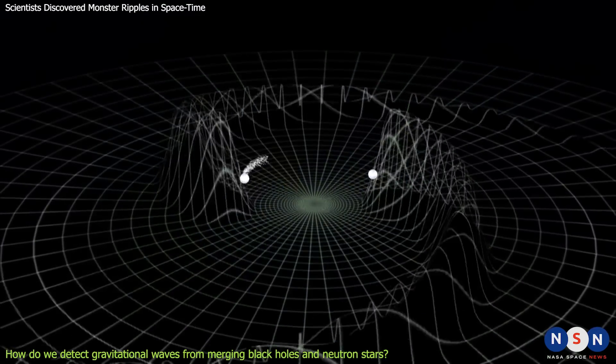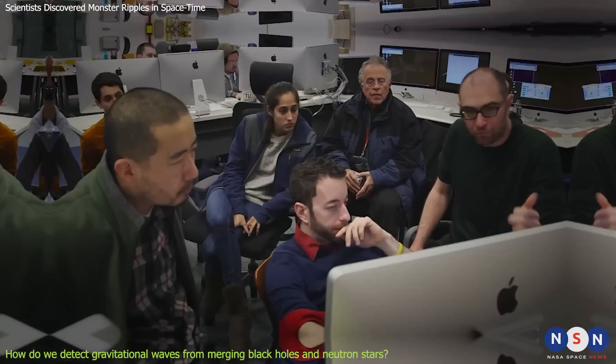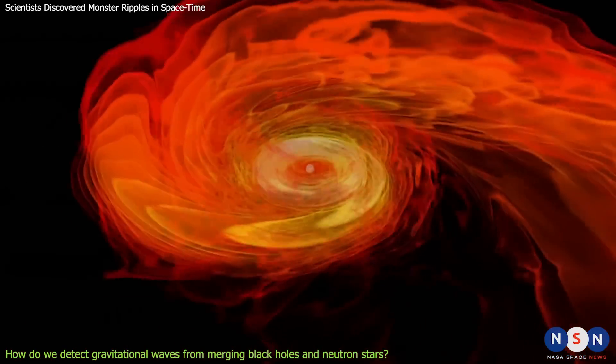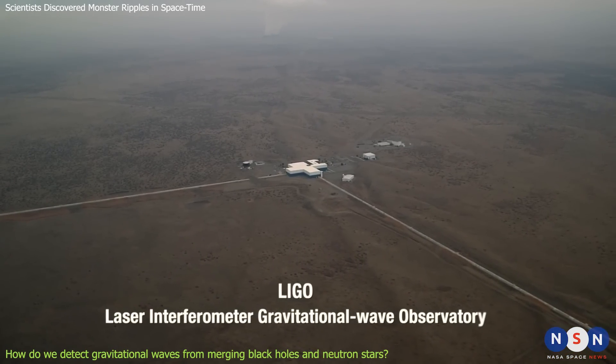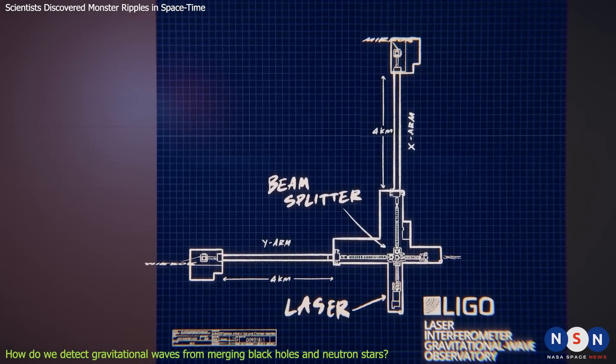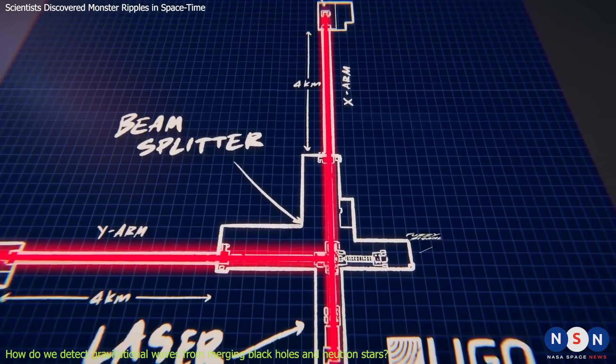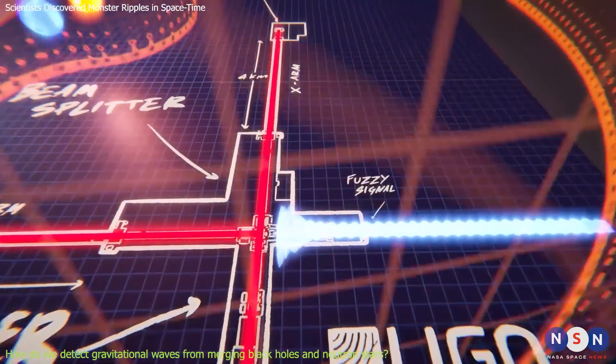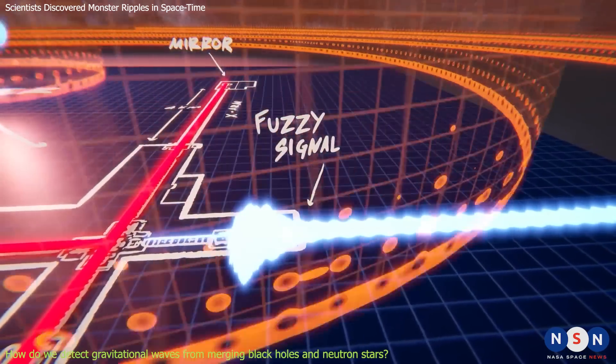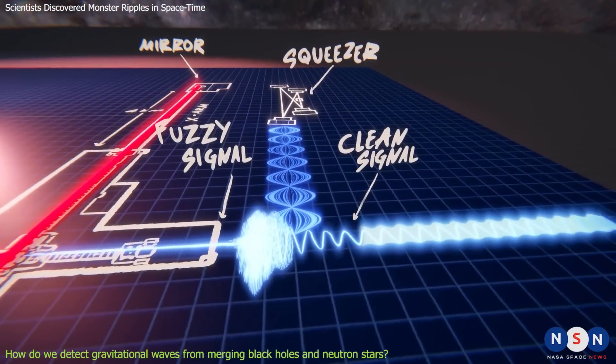In fact, gravitational waves are extremely hard to detect, because they are very weak and easily drowned out by noise. The first direct detection of gravitational waves was made in 2015 by the twin detectors of LIGO, which stands for Laser Interferometer Gravitational Wave Observatory. LIGO consists of two L-shaped tunnels, each four kilometers long, with mirrors at the ends. A laser beam is split and sent along each arm of the L, then reflected back and recombined. If a gravitational wave passes by, it will slightly change the length of each arm, causing a tiny shift in the interference pattern of the laser light. By measuring this shift with extreme precision, LIGO can infer the properties of the gravitational wave.